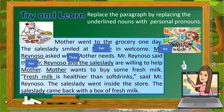'Mother wants to buy some fresh milk' becomes 'She wants to buy some fresh milk.' Next: 'Fresh milk is healthier than soft drinks, said Mr. Reynoso.' We replace 'fresh milk' with 'it': 'It is healthier than soft drinks.' Finally: 'The sales lady went inside the store. The sales lady came back with a box of fresh milk' becomes 'She came back with a box of fresh milk.'